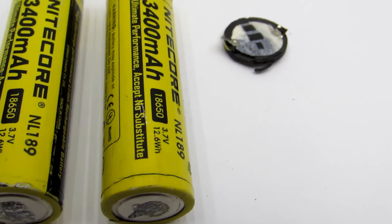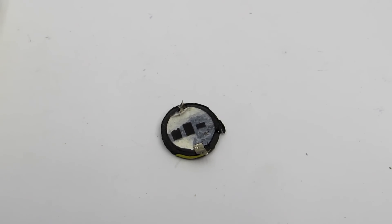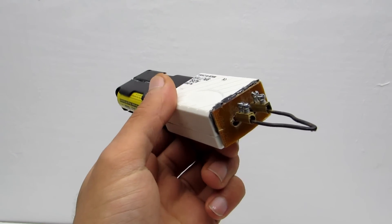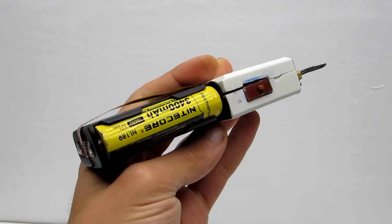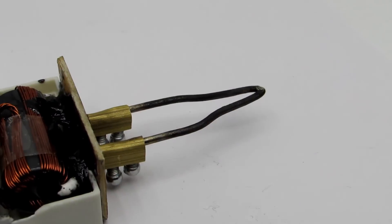I advise you to use rechargeable batteries 18650 type with built-in protection. It makes no sense to use Nitecore, which you can see in the video. These are the same Panasonic and cost about $2 apiece. Under the video you will find links to cheaper batteries with protection.